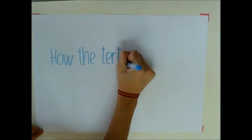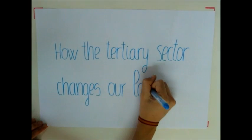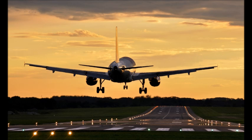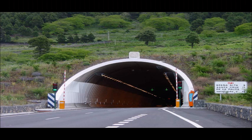Finally, we are going to explain how the tertiary sector changes our landscape. In this photo, we can see how a transport network as an airport has changed the landscape. Whereas in this photo, a tunnel where vehicles go through has also changed the landscape.